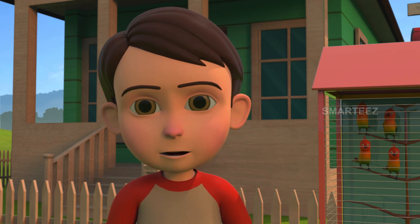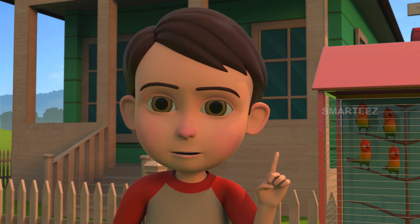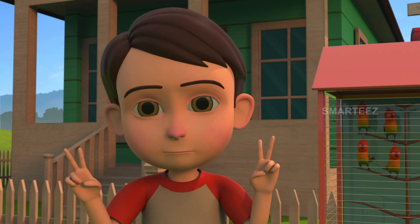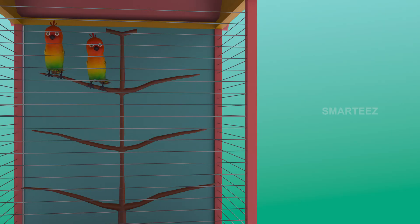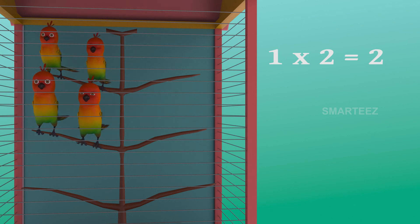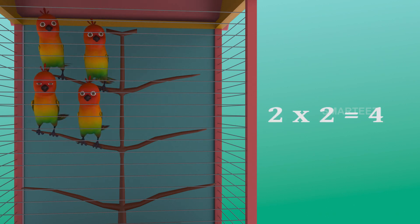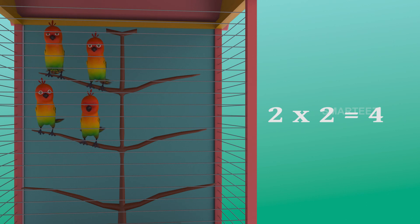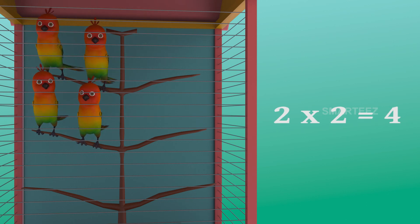That sounds funny. I know what you mean. One two is two. And two twos are four. I'll make it simpler. The parakeets are settling in the cage as sets of two. The first set had two parakeets, and when the second set of two parakeets was added to the first set, it became four. So two sets of two parakeets make it four parakeets.